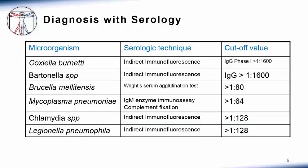Serologies can be used to diagnose some of the pathogens that are difficult to grow in blood cultures. Examples of pathogens typically diagnosed by serologies include Coxiella, Bartonella, and Brucella, as well as Mycoplasma, Chlamydia, and Legionella. The serologic techniques and cutoff values are listed here for your interest; these are not things that you need to memorize, only be aware of. I do recommend noting that Coxiella, Bartonella, and Brucella are the common pathogens in which we use serologies to make the diagnosis.